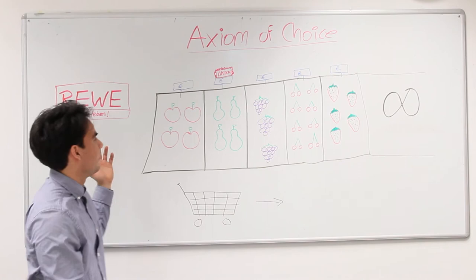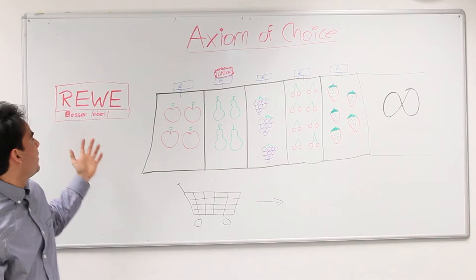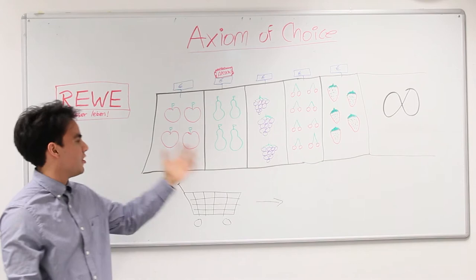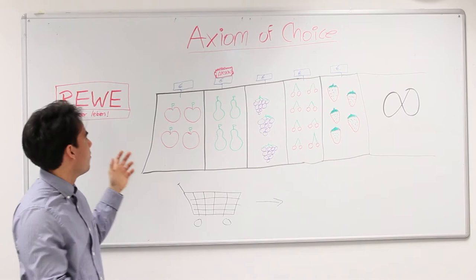Let's assume that we are right now at the supermarket, and we are at the fruit department, and we would like to pick from each shelf a different fruit. Well, this is a very easy task. We could just pick our shopping cart and go through each shelf and pick up a fruit.